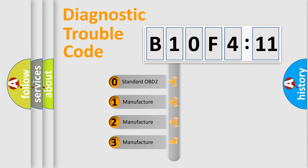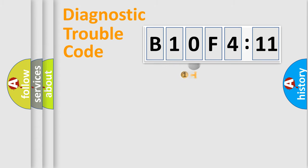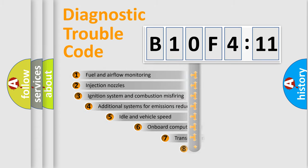If the second character is expressed as zero, it is a standardized error. In the case of numbers 1, 2, or 3, it is a more prestigious expression of the car-specific error.